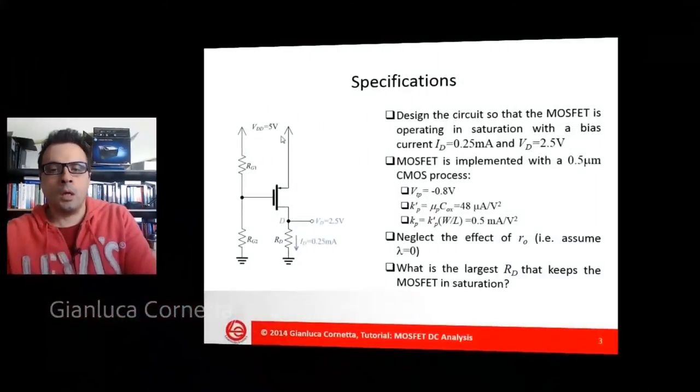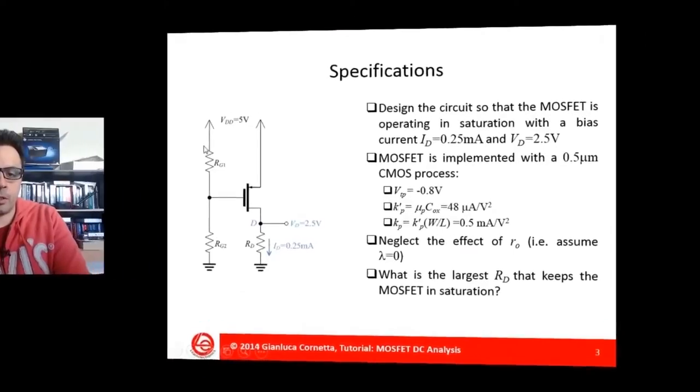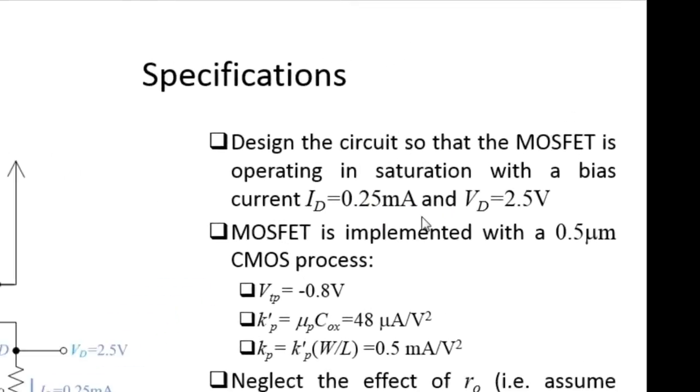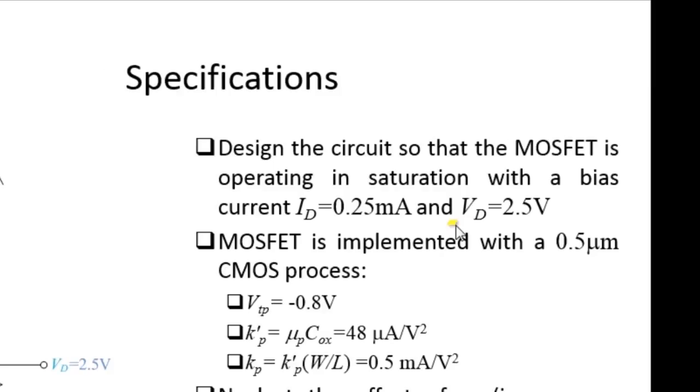In this short tutorial, I will demonstrate how to design a very simple resistive bias network made up by three resistors, namely RG1, RG2, and RD. The goal is to bias the MOSFET transistor with a 0.25 mA drain current and a 2.5V DC drain voltage.